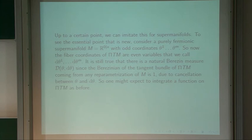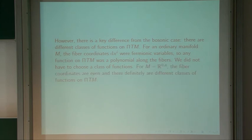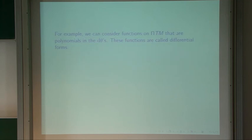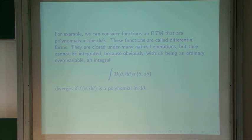Since there's a natural measure on pi(TM), you could hope to integrate a function on pi(TM). But there's a key difference from the bosonic case: there are different classes of functions on pi(TM). For an ordinary manifold, the fiber coordinates were fermionic variables so any function was a polynomial and we did not have to choose a class. For R^{0|n}, the fiber coordinates are even, and there definitely are different classes. For example, we could consider functions that are polynomials in d-thetas — we'll even call them differential forms. But you can't integrate them because since d-theta is an ordinary even variable, an integral of a function that's polynomial in d-theta diverges.